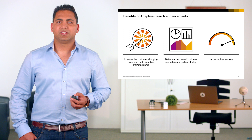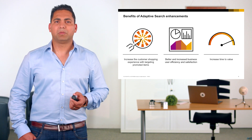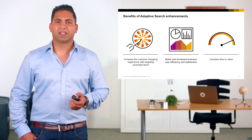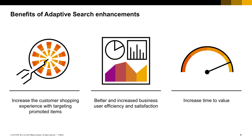The real-time status gives you the possibility to see right away if the search profile has been synced or not. The new adaptive search features significantly contribute to a better customer shopping experience by emphasizing promoted items, marking categories, and adding synchronization — improving business user efficiency and satisfaction while increasing time-to-market and time-to-value.